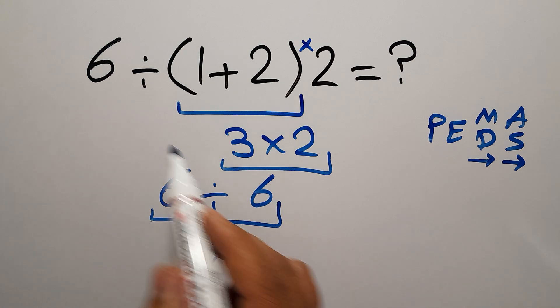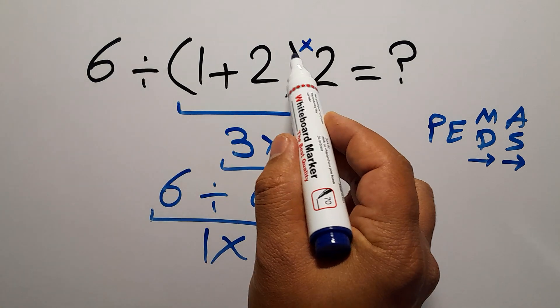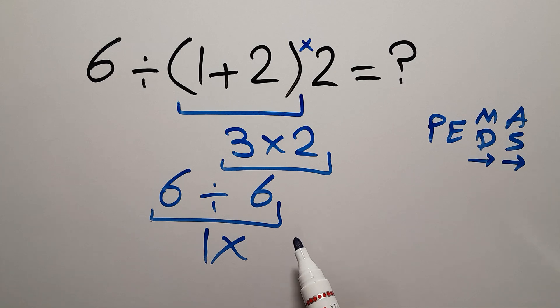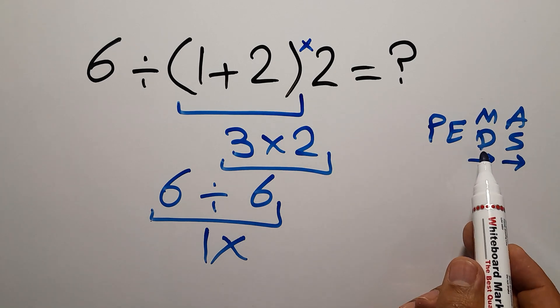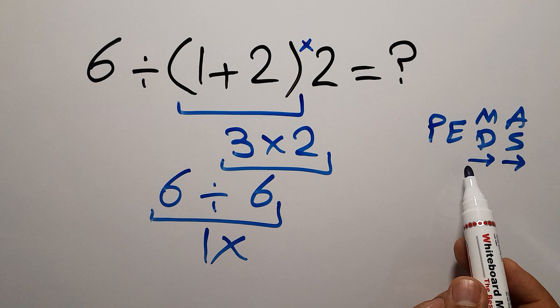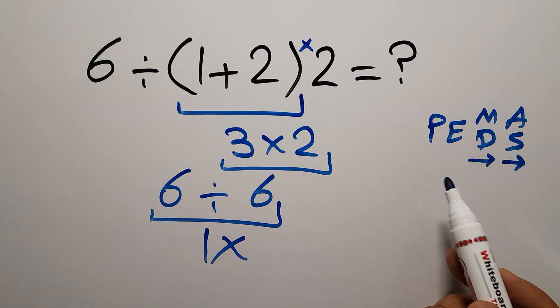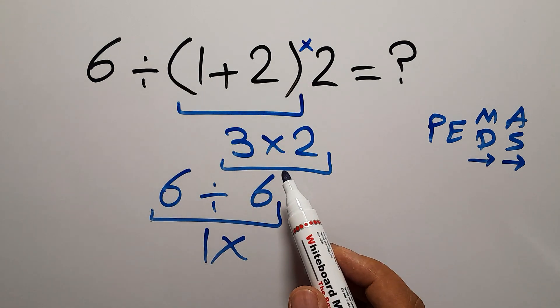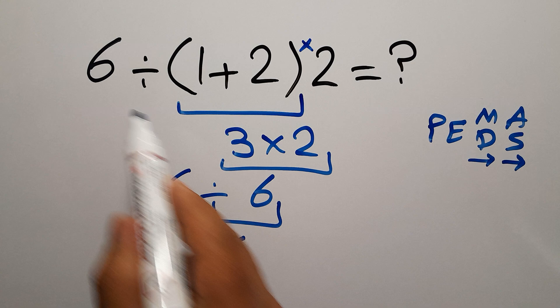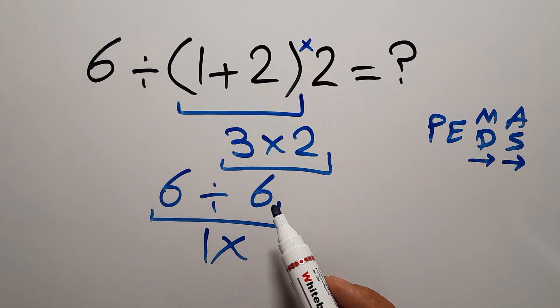Then we have to do this division, not this multiplication, because as I said, multiplication and division have equal priority and we have to work from left to right. So after this parentheses, we have to do this division, not this multiplication.